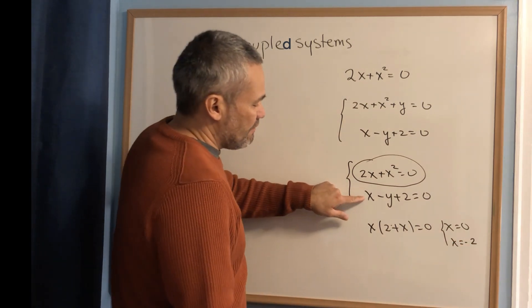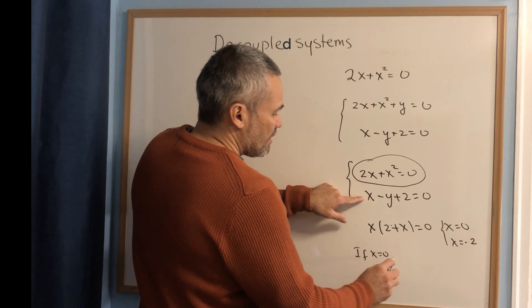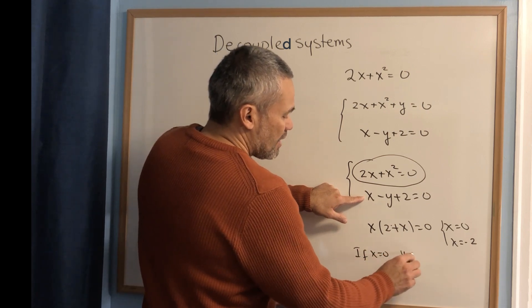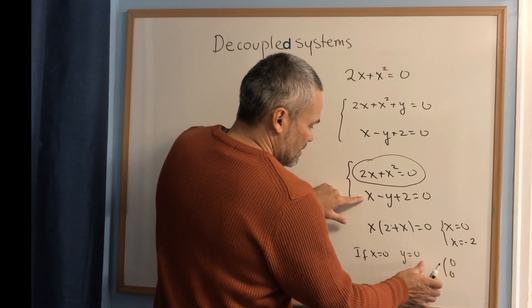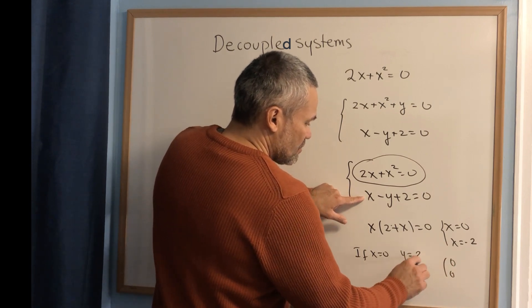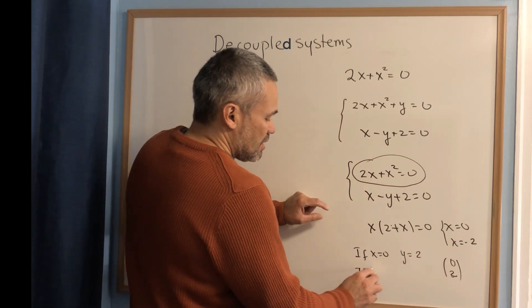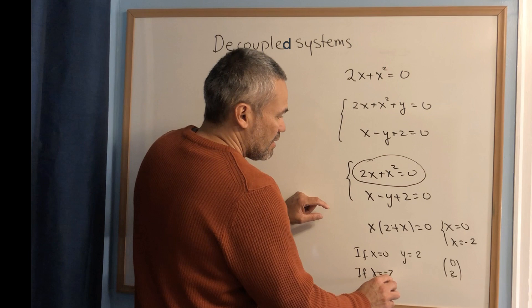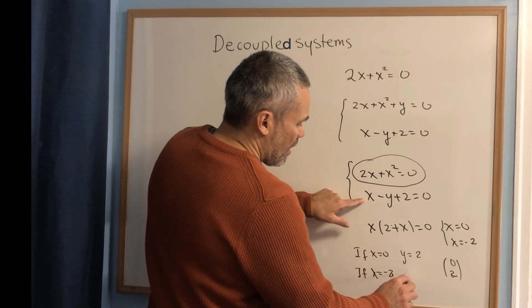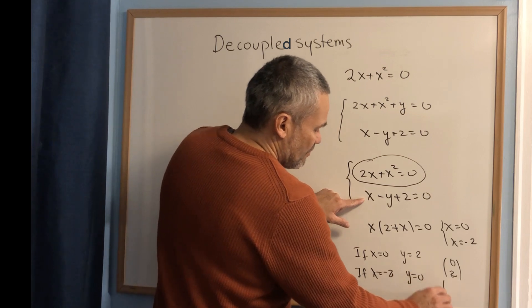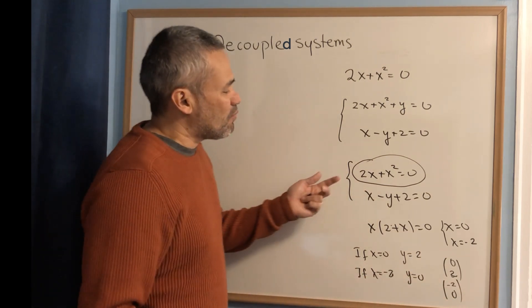If x equals 0, then from the second equation y equals 2, giving us the solution (0, 2). And if x equals negative 2, then y equals 0, giving us the solution (negative 2, 0).